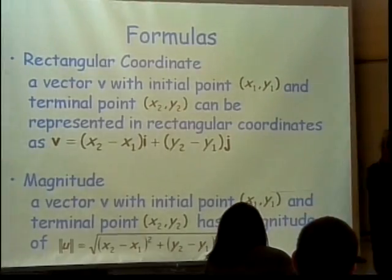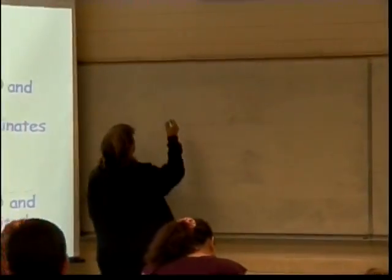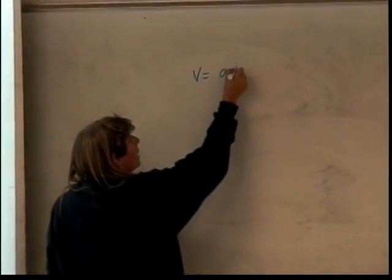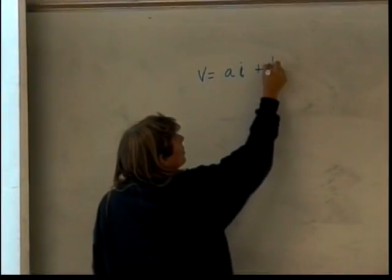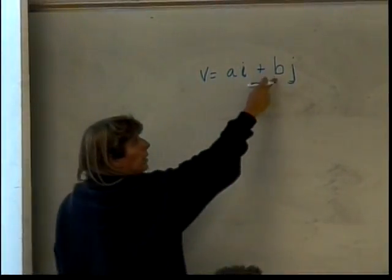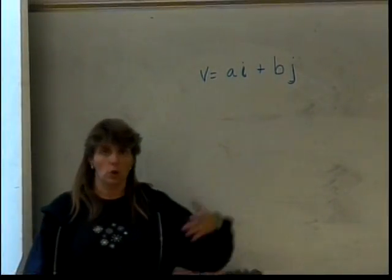So, once we put our vector in rectangular form, we usually would write it as some number i plus some number j, where a and b are the x and y coordinates of the terminal point on the vector.